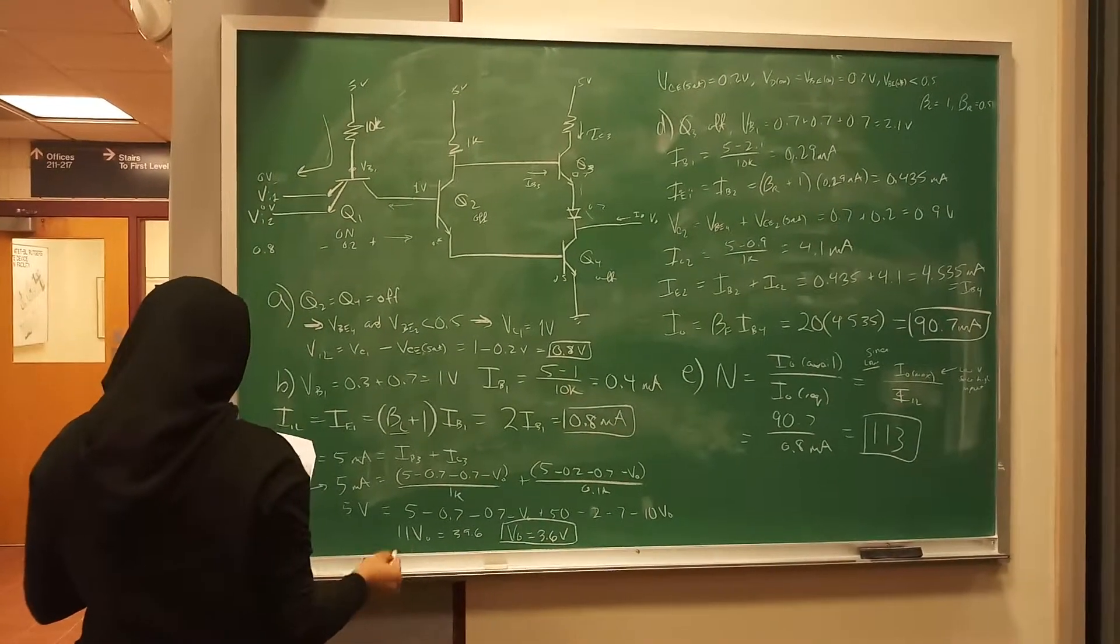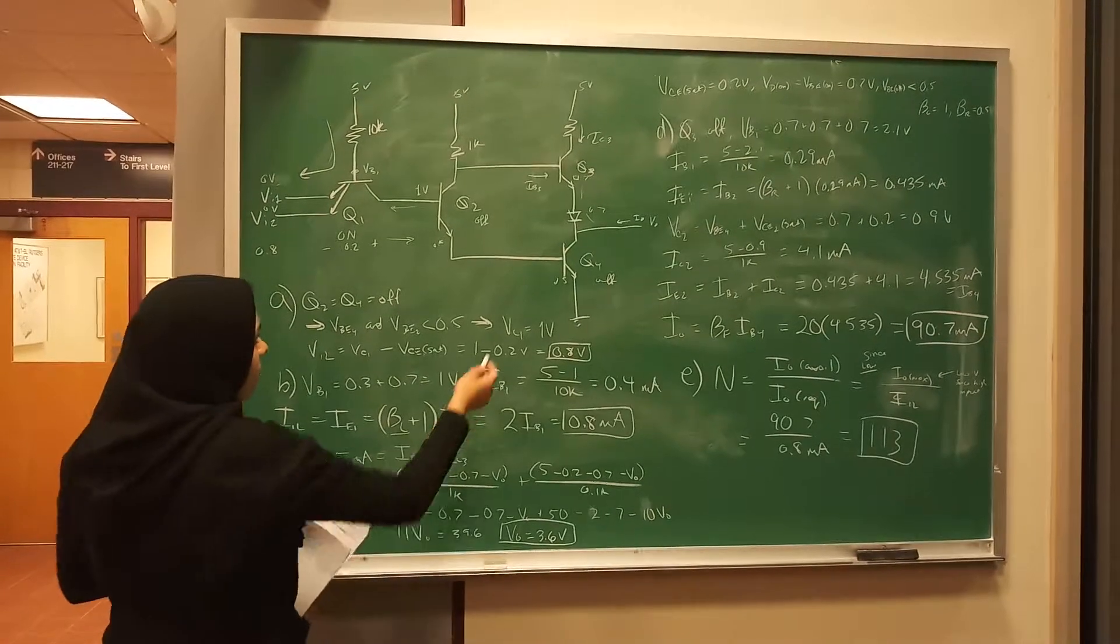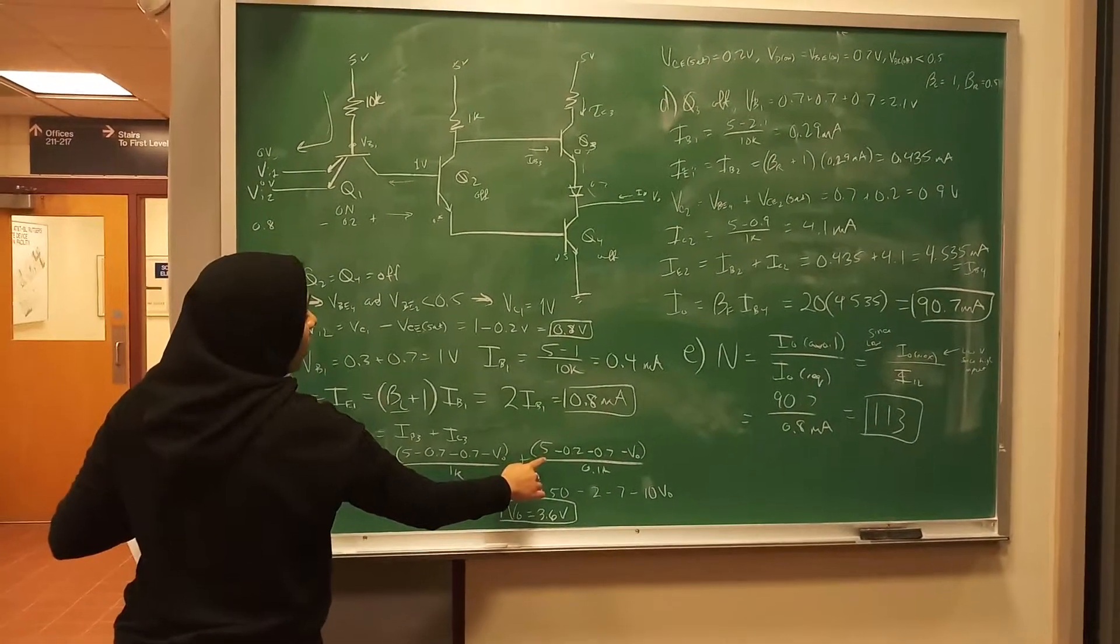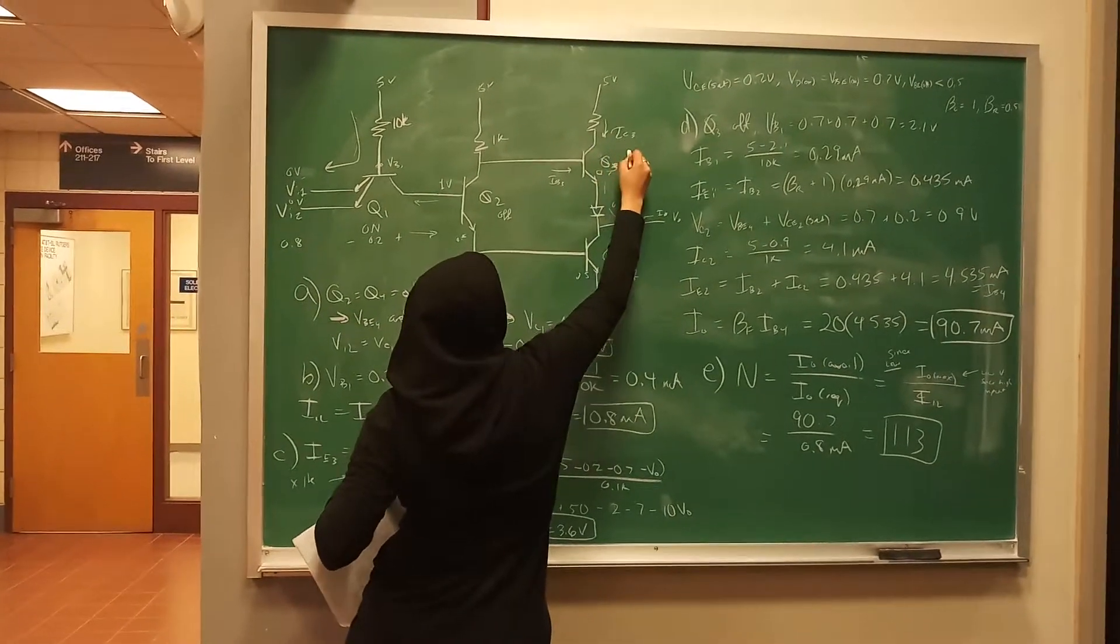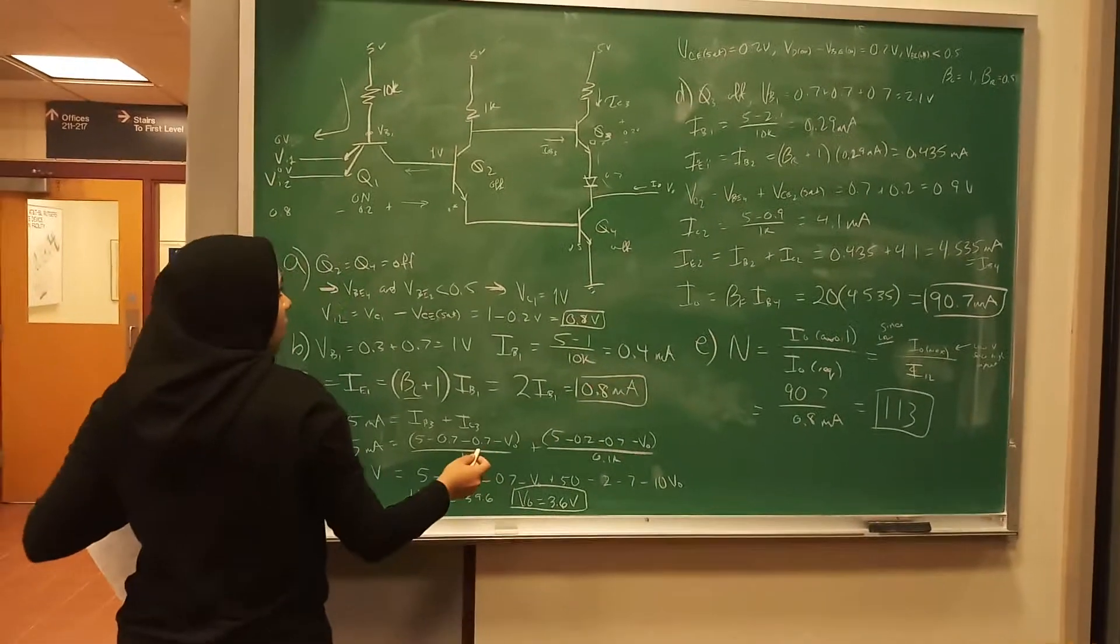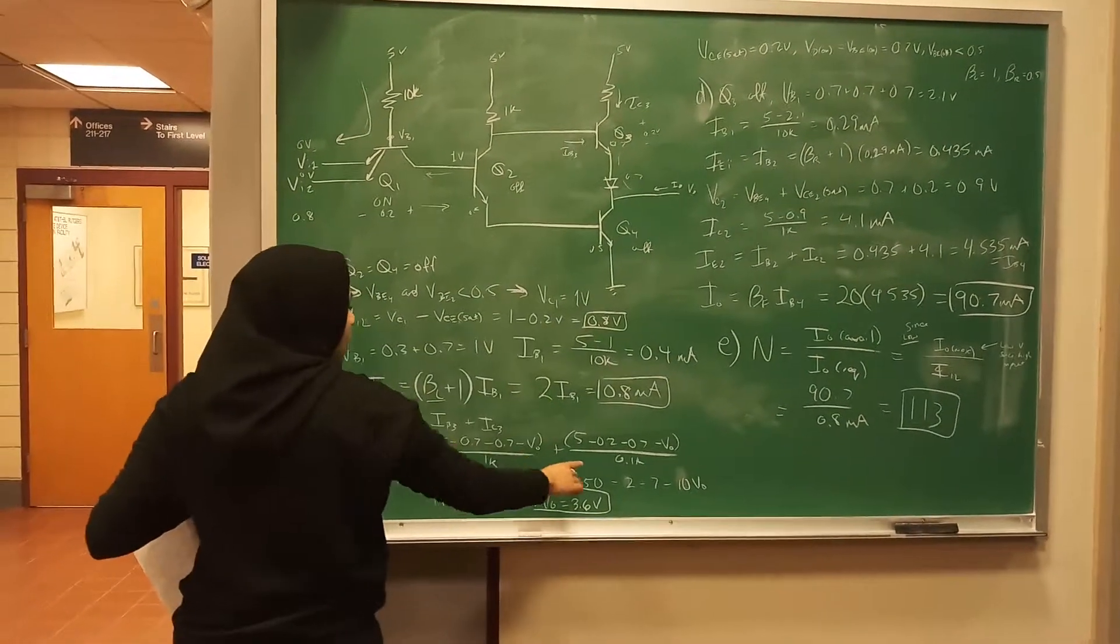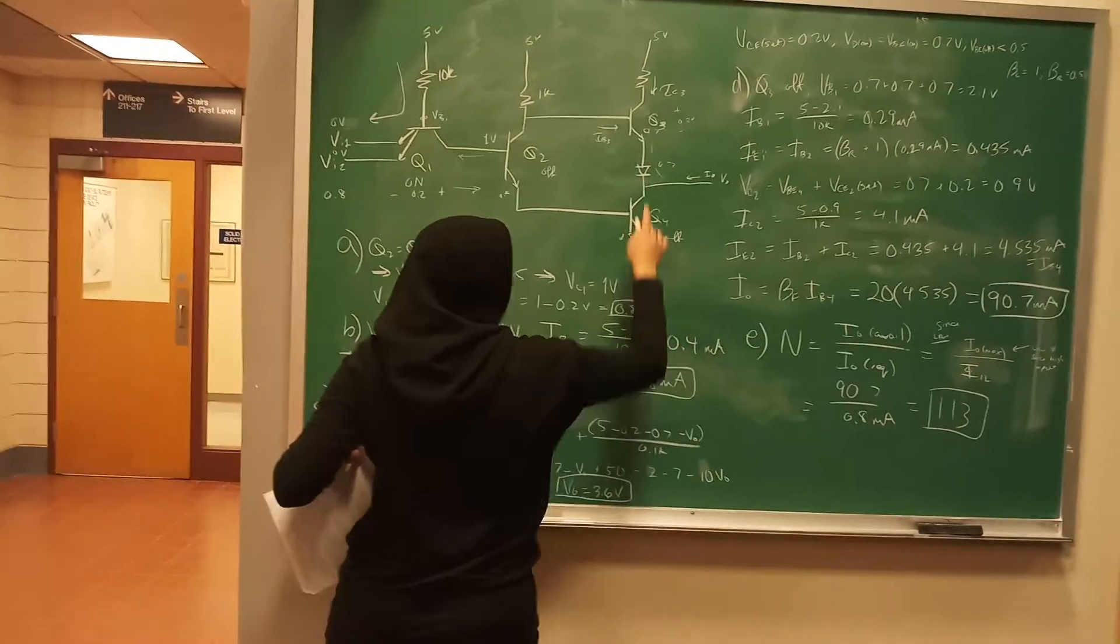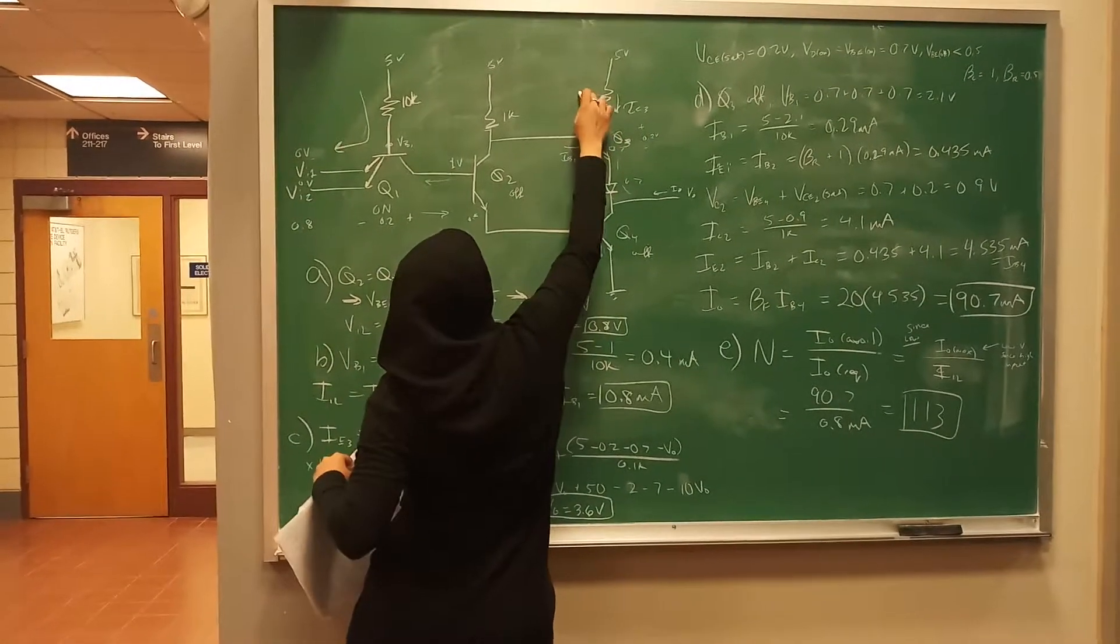And you want to try to find V_out, so that's how you do this. And then here, same thing with I_C3, it's 5 minus 0.2 because this part is saturated. And then, because this is on, and then this is minus 0.7 for this diode, and then this is V_out. And then divide by, so this is, I think, 0.1k.